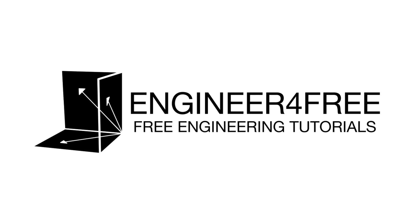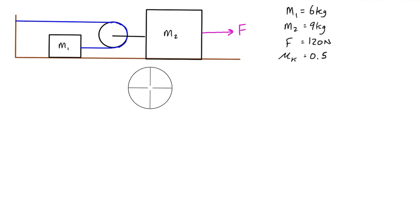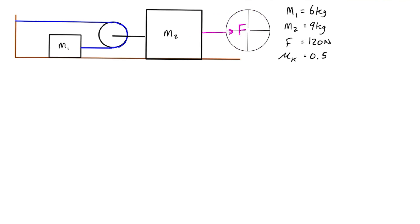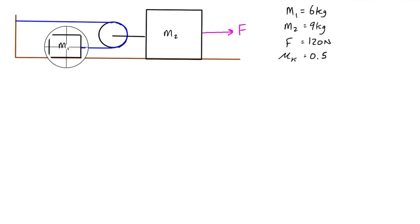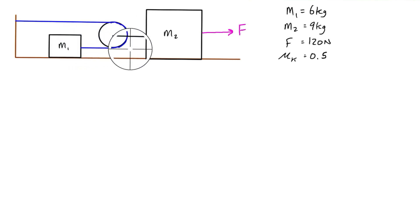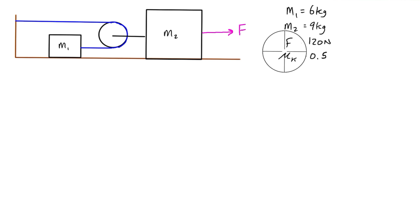Welcome back. In this video we've got a kinetics moving pulley example problem. We've got two masses M1 and M2, and we're pulling on M2 with a force F. That creates a tension in the cable which pulls the pulley to the right. As the pulley translates right, M1 accelerates in the same direction as M2 but at a different rate, so we'll have a bunch of unknowns to label on the diagram.